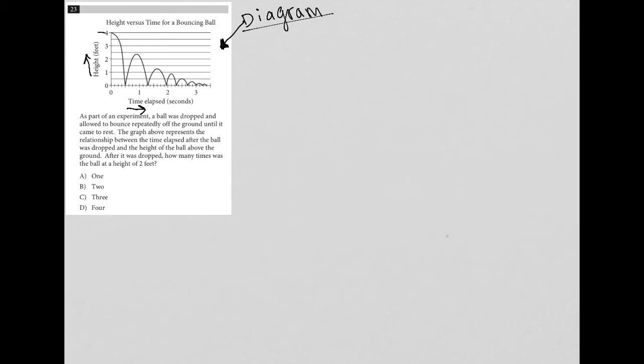Now that I understand what the graph is showing me, I'm going to read the question. It says: as part of an experiment, a ball was dropped and allowed to bounce repeatedly off the ground until it came to rest. I've already taken the time to make sure I understood that. The graph above represents the relationship between the time elapsed after the ball was dropped and the height of the ball above the ground. No surprises there.